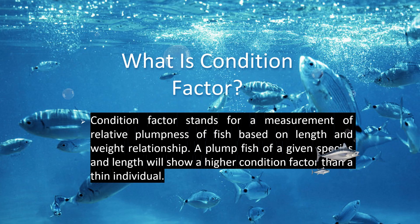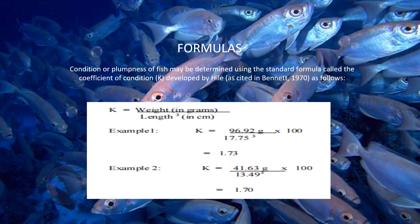What is condition factor? Condition factor is a measurement of the relative plumpness of a fish based on the length and weight relationship. A plump fish of a given species and length will show a higher condition factor than a thin individual. The condition or plumpness of a fish may be determined using the standard formula called the coefficient of condition, which stands for the letter K, developed by Hyle. K, the coefficient of condition, equals weight in grams over length to the power of 3 in centimeters.